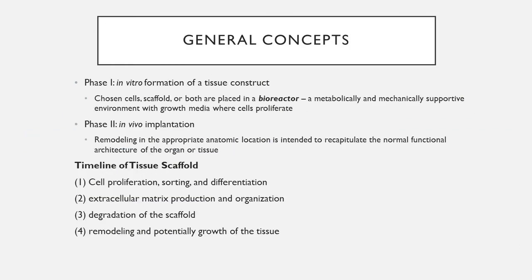Now I'd like to give a general approach to a tissue engineering procedure. The first phase typically requires the in vitro formation of a tissue construct. Cells and some sort of scaffold are combined together and placed in what's called a bioreactor — a vessel that provides a metabolically and mechanically supportive environment with growth media in which cells can grow. Cells proliferate and elaborate extracellular matrices that provide the foundation of tissue.